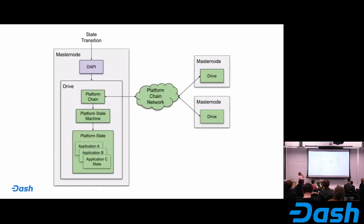Here is a deeper look into Drive. A state transition is submitted to Drive through DAPI, and then we have sub-components within Drive — particularly the platform chain, which is a second chain that operates adjacent to the core chain. We have a state machine that regulates the state of your application and then updates the platform state, which is a global view of all data within the platform. Each application will have its own specific state within that global view, and everything is propagated through the chain network to other Drive instances on the masternodes.